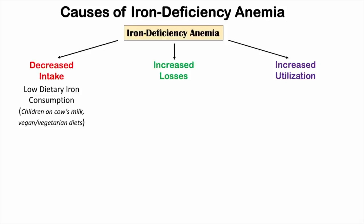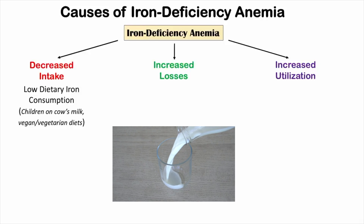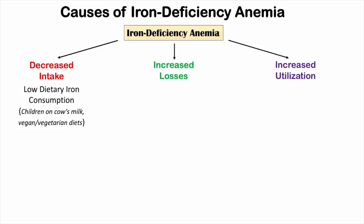Some examples of low dietary iron consumption include children on cow's milk. Very young children who drink lots of cow's milk don't get enough iron from that source, which can lead to iron deficiency anemia. This doesn't happen in children fed breast milk, because breast milk contains more iron that is more available to the child. Some vegan and vegetarian diets can also lead to iron deficiency anemia due to low iron content.